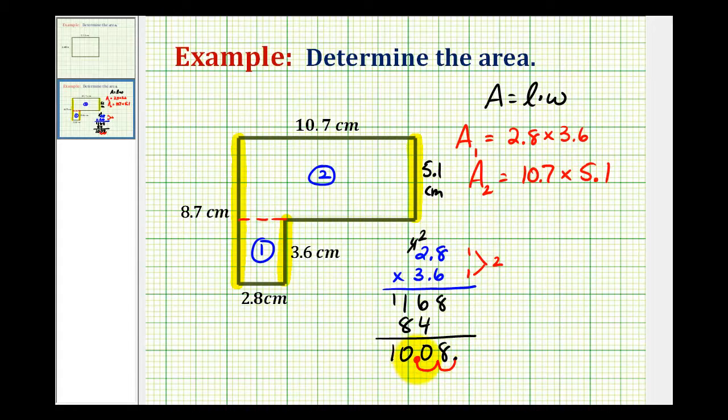So area 1, let's go ahead and write this over here, area 1 is equal to 10.08 and the units would be centimeters squared.